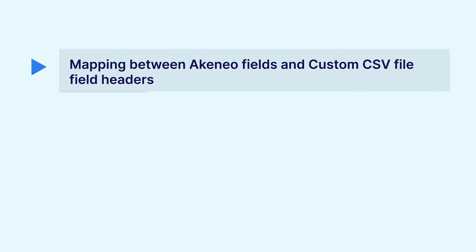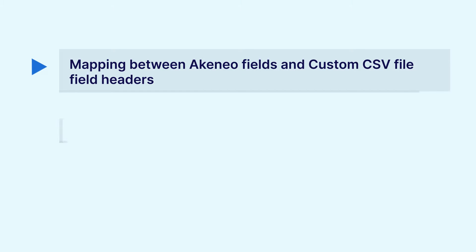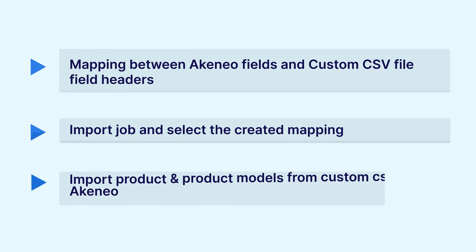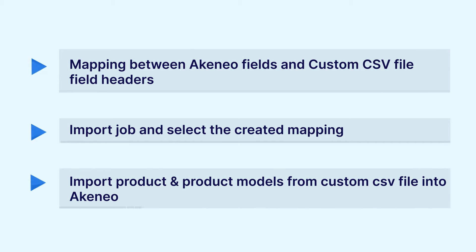In today's video tutorial we'll be going to the admin backend panel to see how the admin of Akinio can create a mapping there. Within the mapping, we'll be creating a mapping between the Akinio fields and the custom CSV field headers. We'll also see how the admin can create an import job, select the created mapping, and run that import job to import products and product models from the custom CSV file into Akinio.